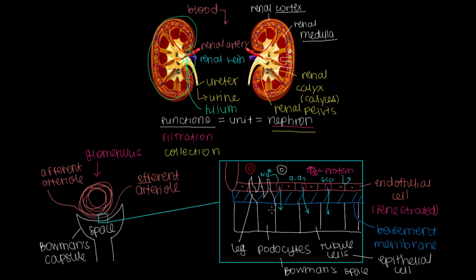We have these podocytes that hug the arterioles right here by holding on to the endothelial cells. And we also have this basement membrane that prevents giant proteins and our red and white blood cells from leaking through. And we have these tubule cells that help line the other side. They're epithelial cells.